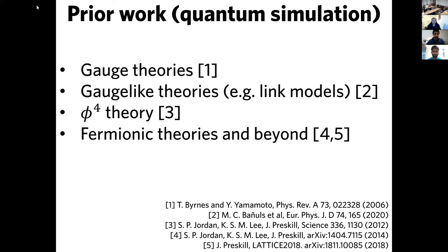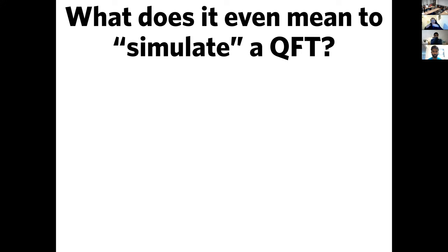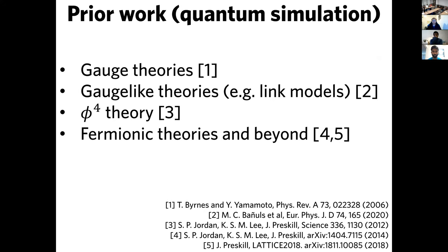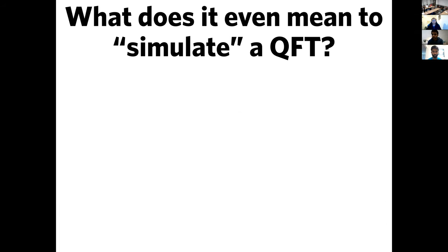Perhaps most important for this talk is the key result of Jordan, Lee, and Preskill in 2012, where they presented the first legitimate digital quantum simulation of an interacting quantum field theory — namely phi-4 theory. Since then that result has been taken further and continues to be developed. These are key results in the background of this talk and a huge inspiration. I have to apologize to the authors because I'm going to explain why I don't think they've solved everything.